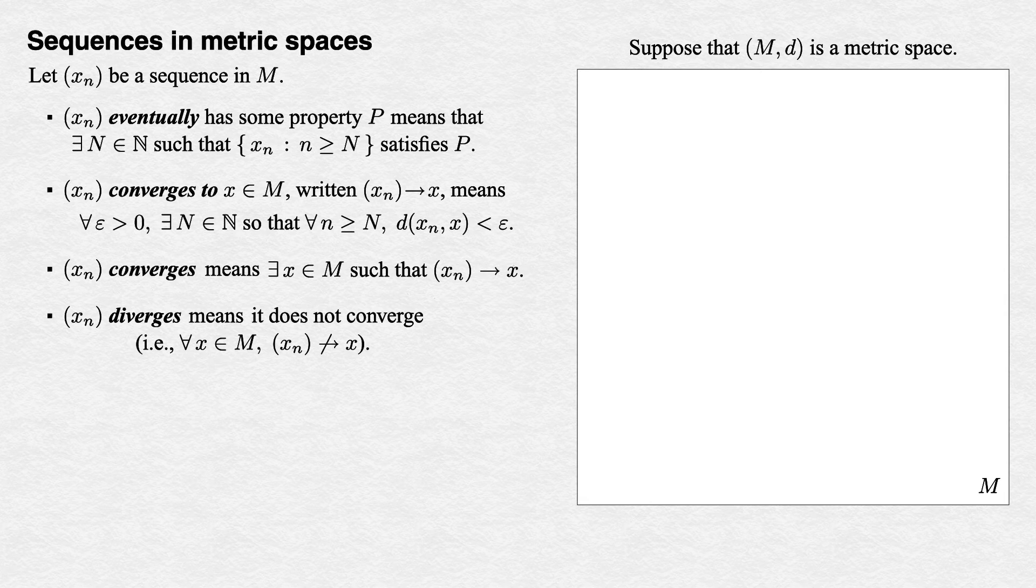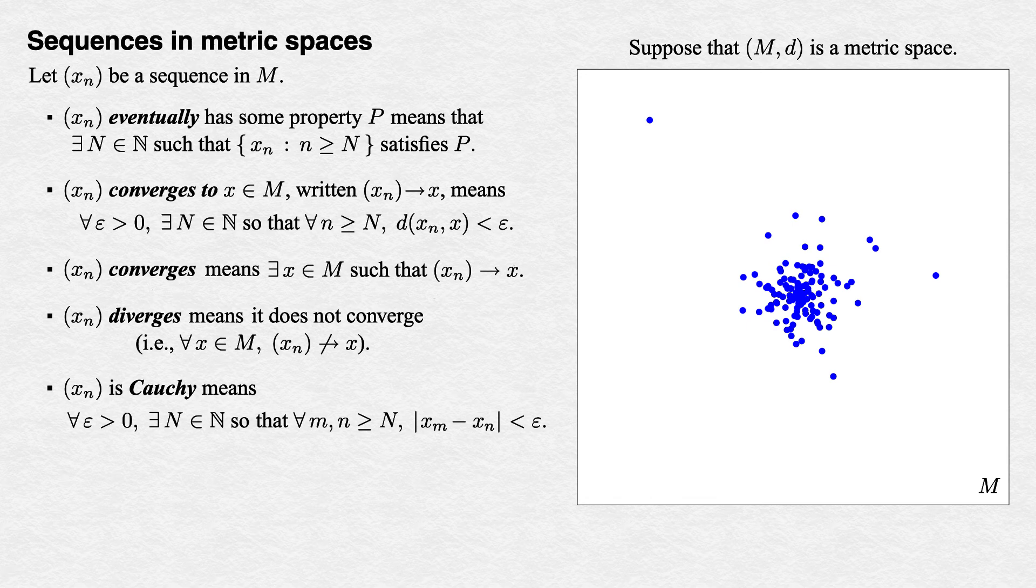Translating our last definition, that of a Cauchy sequence, to metric spaces is even easier. Recall that the sequence of real numbers (x_n) is Cauchy means for all epsilon > 0, there exists N such that m, n >= N implies |x_m - x_n| < epsilon.